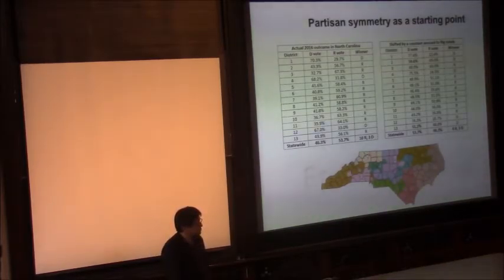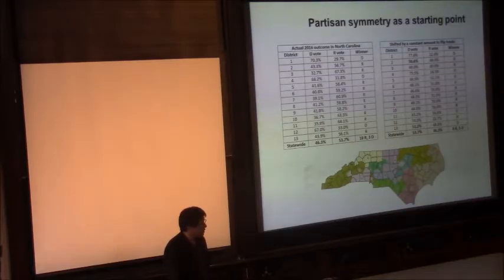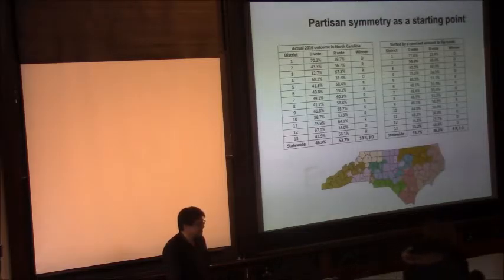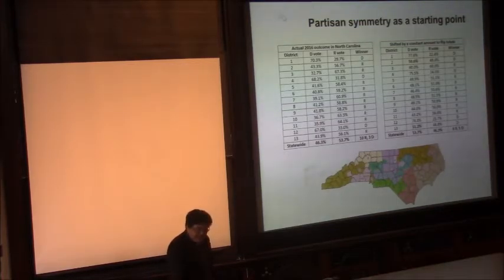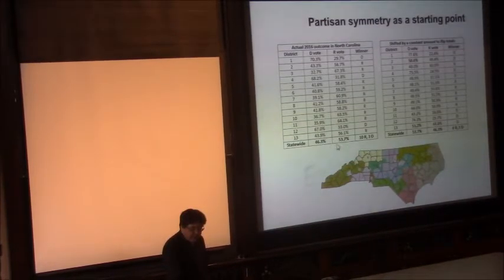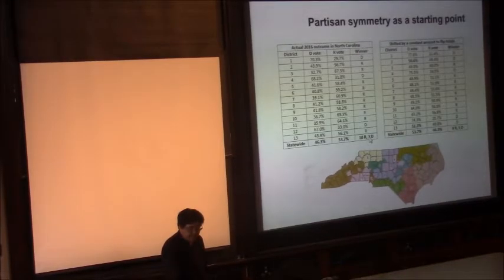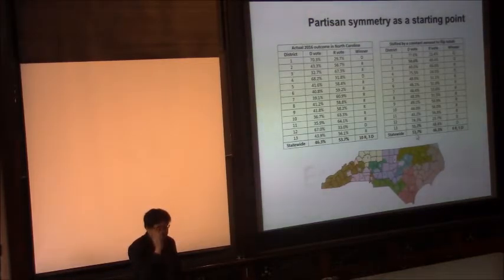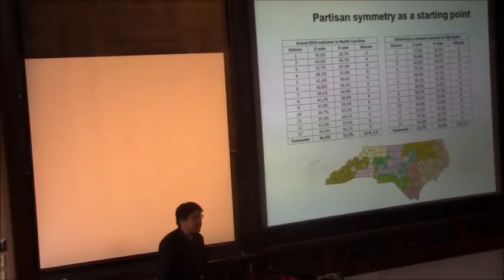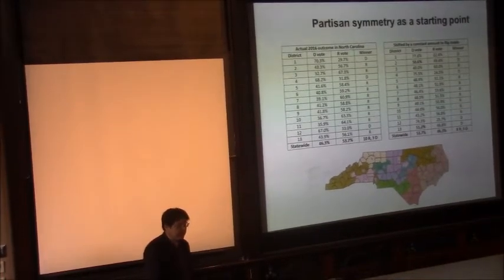This is the actual election in North Carolina where a statewide 53 or 54% of people voted for Republicans, 46% of people voted for Democrats, and the result was a delegation of 10 Republicans through Democrats. If you add enough votes across the board to make the Democratic vote 53 or 54% and the Republican vote 46%, so this requires adding votes across the board to flip the total, you end up with a delegation that is still eight Republicans, five Democrats. And so even if Democrats were to win the statewide vote 54 to 46, they would still only get five out of 13 seats. And so that's an example of partisan asymmetry.